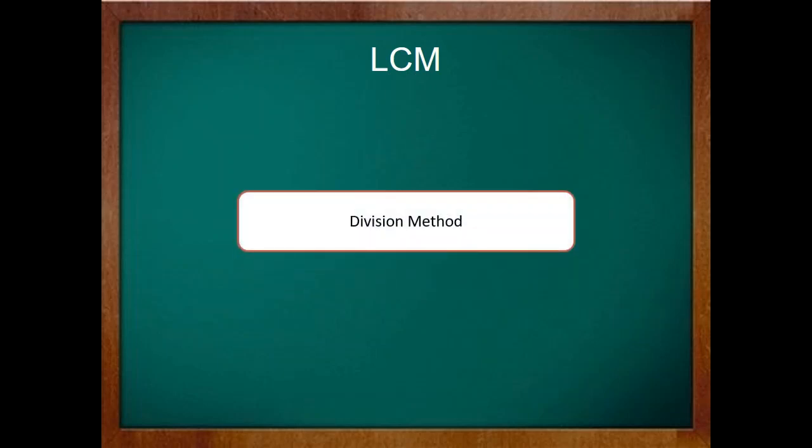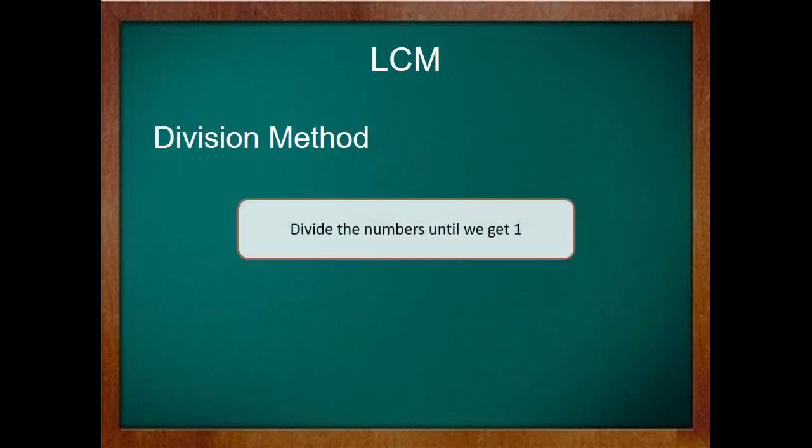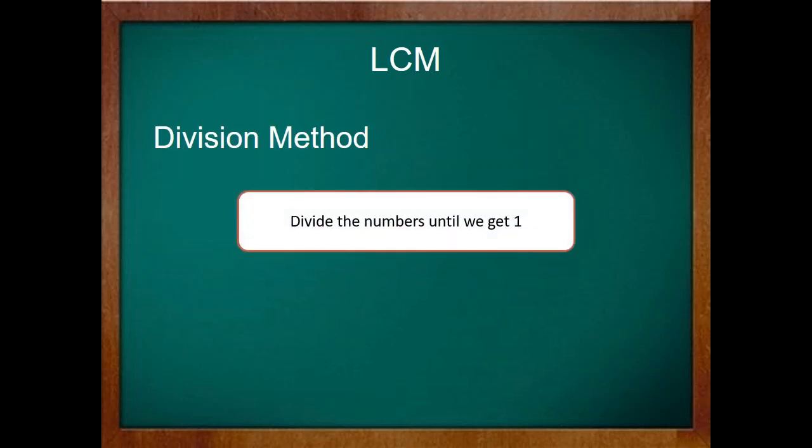In this method we write two numbers and divide them with the smallest prime number until we get one. Let's apply this method for finding the LCM of number 9 and 12.